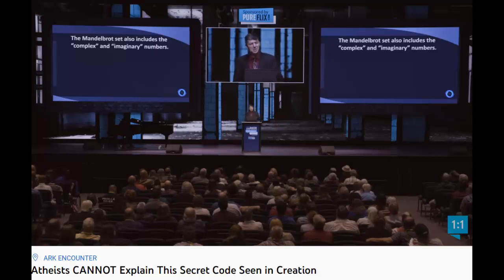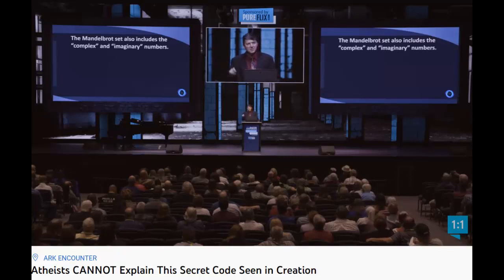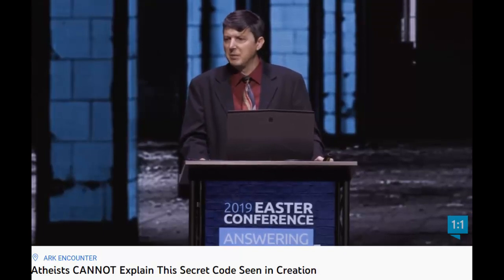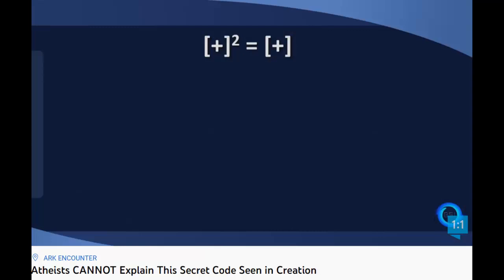But how do we have a number that times itself is negative? It's represented by a lowercase i, and that's the primary imaginary number — i times i is negative 1. How do we make sense of that? Imaginary numbers are not positive, because a positive number squared is positive. The imaginary number times itself is negative. Imaginary numbers are not negative, because a negative number squared is also positive. And imaginary numbers are not zero, because zero squared is zero.